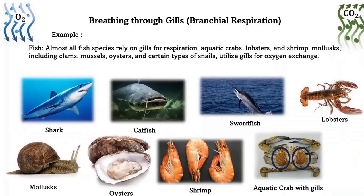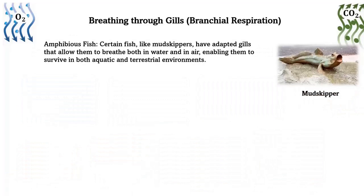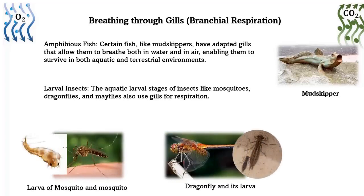Examples of gill respiration: fish — almost all fish species rely on gills for respiration. Aquatic crustaceans — crabs, lobsters, and shrimp. Mollusks — including clams, mussels, oysters, and certain snails utilize gills for oxygen exchange. Amphibious fish — certain fish like mudskippers have adapted gills that allow them to breathe both in water and in air, enabling survival in both aquatic and terrestrial environments. Aquatic insect larvae — the aquatic larval stages of insects like mosquitoes, dragonflies, and mayflies also use gills for respiration. That's it for this video — make sure to subscribe, hit the like button, and turn on post notifications so you never miss a video. Goodbye!